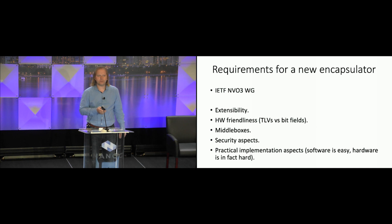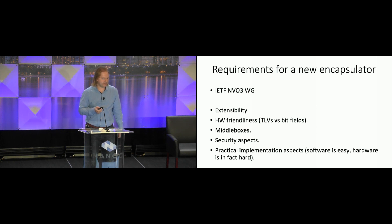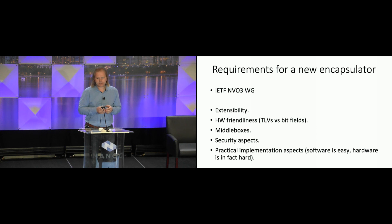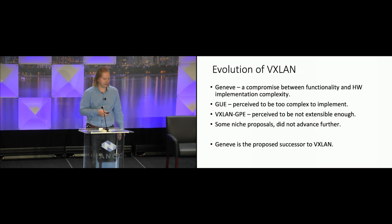The IETF started a dedicated working group — Network Virtualization Overlays over Layer Three — around the 2012 timeframe. The major requirements put before that group were to develop a similar or equivalent encapsulator which had multi-vendor extensibility and which would be hardware friendly. We are talking not only about software implementations, which are easy, but also about hardware-only implementations for which variable-length structures and field manipulation are really costly. There were also concerns about the complete lack of security aspects in VXLAN, and about the ability to implement that in practical terms by the majority of vendors, not only a selected few.